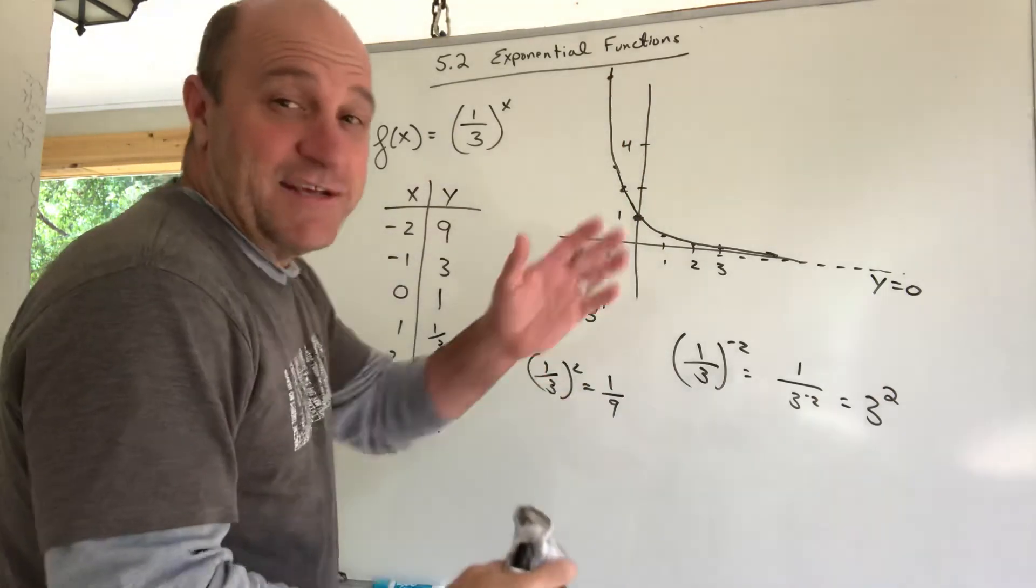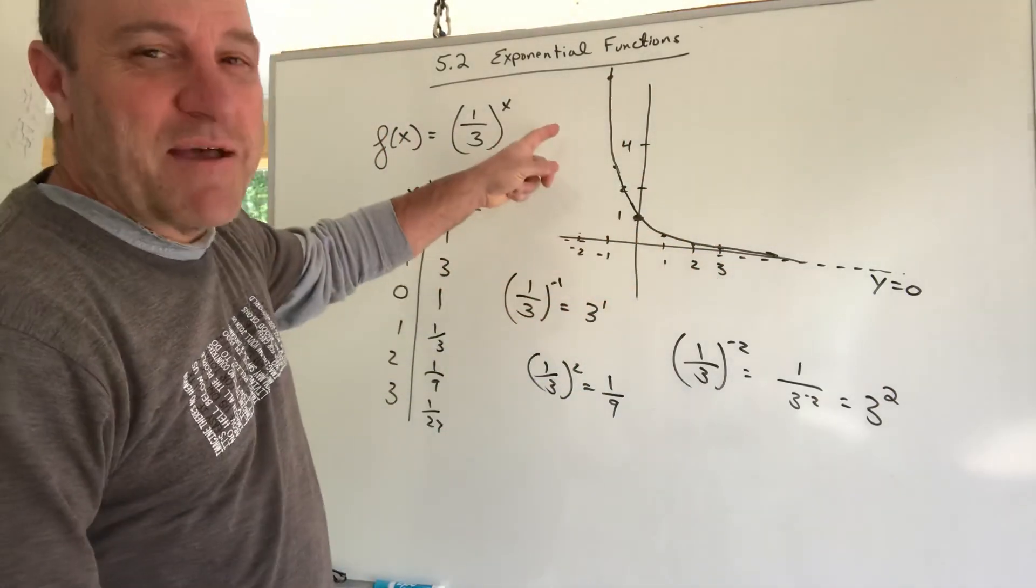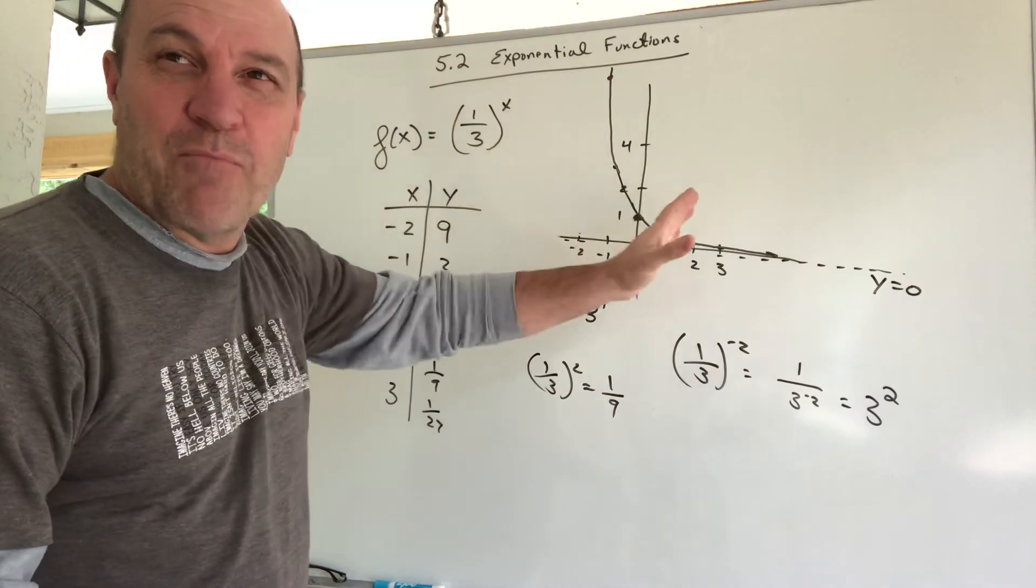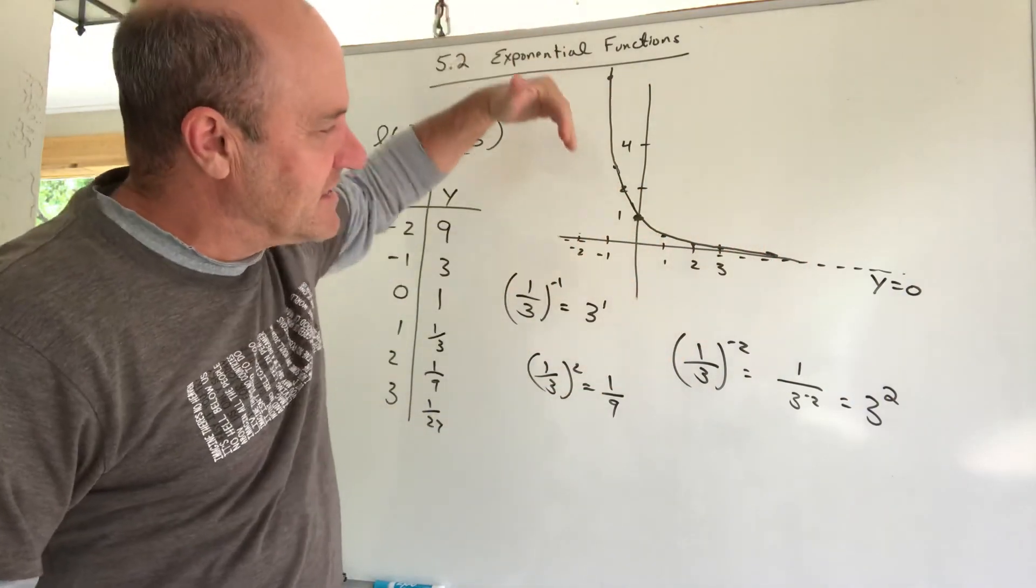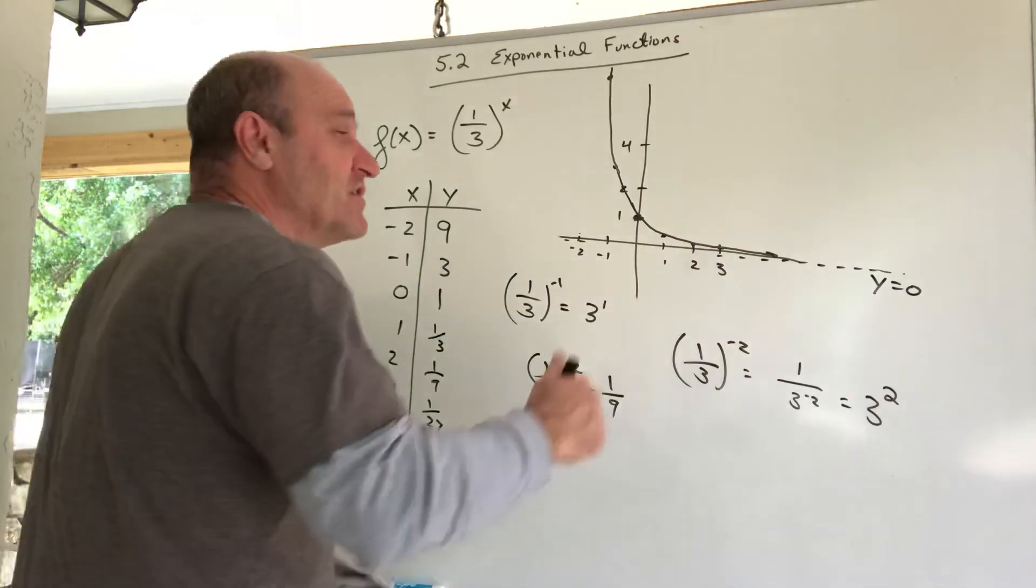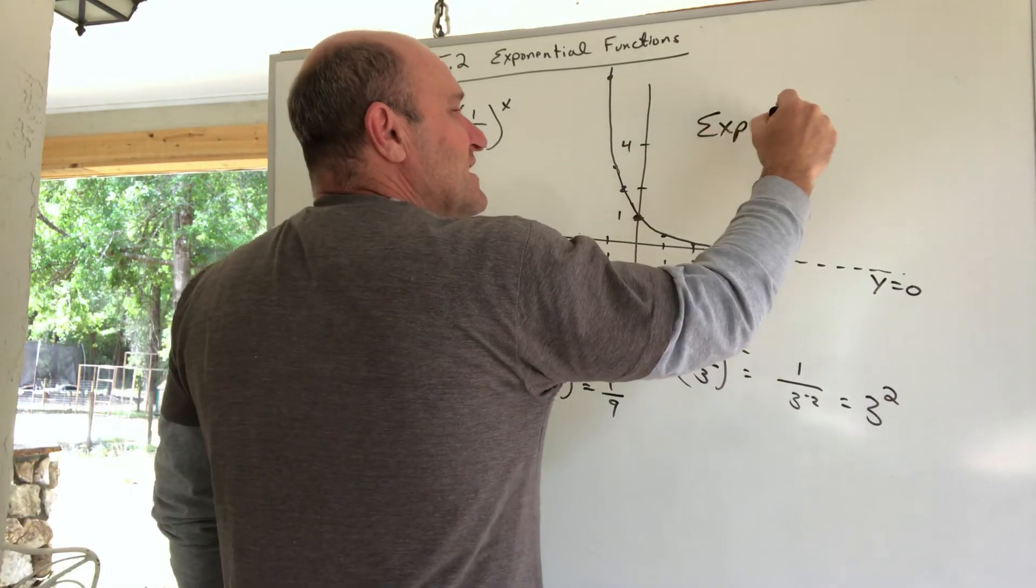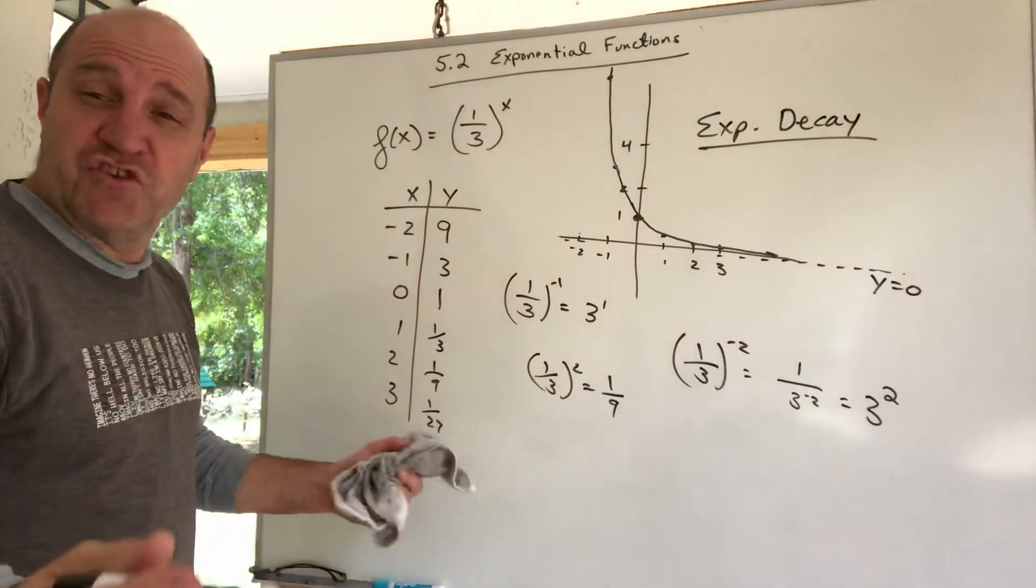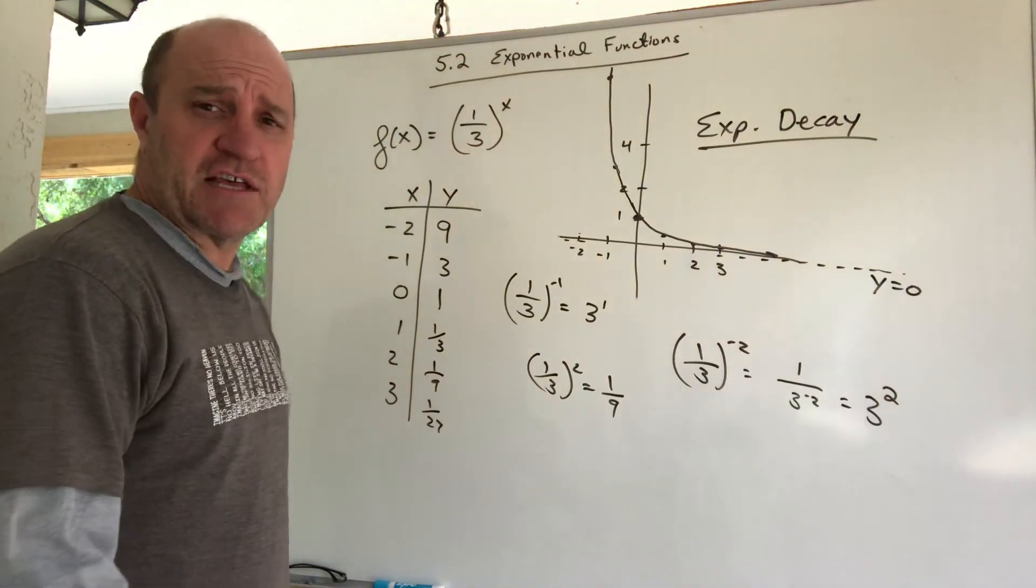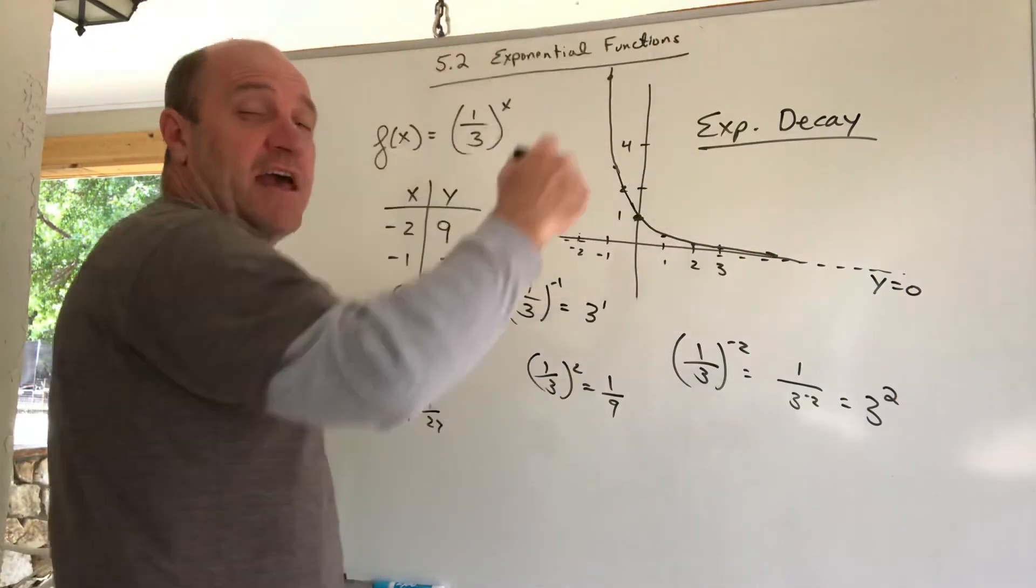It is exponentially growing this way, but you don't call that growing. We don't go backwards. We read left to right, and left to right, this is an exponentially decreasing function, which we call exponential decay. So two big types of exponential functions: exponential growth, exponential decay.